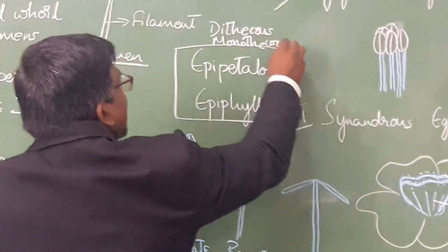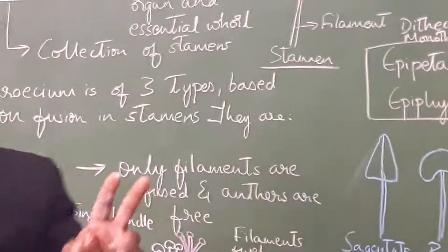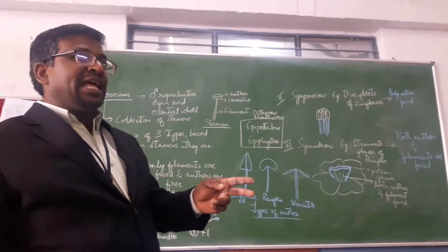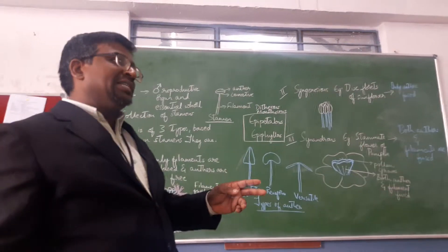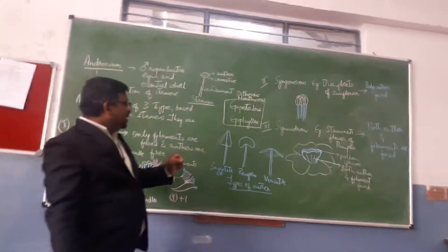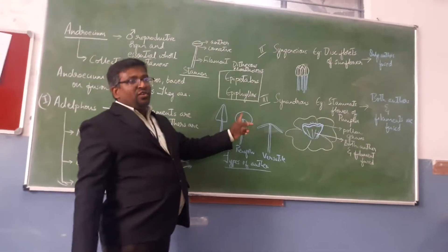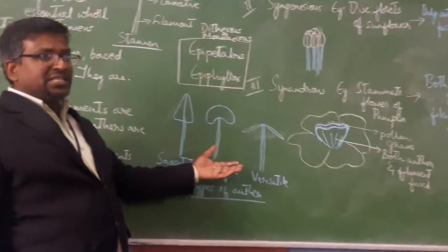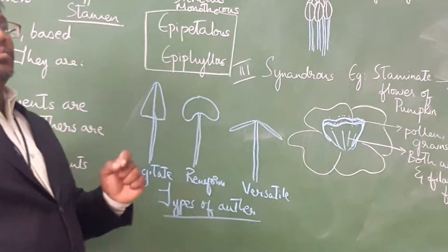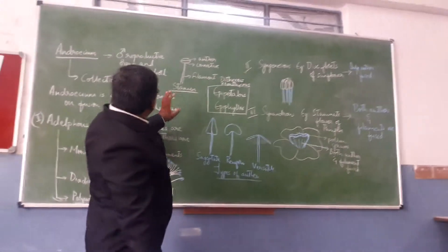Theca means cavity. When anthers have two cavities or two lobes, we call them dithecous anthers. In the case of hibiscus rosa-sinensis, the anther has a single lobe, so we call it a monothecous anther.